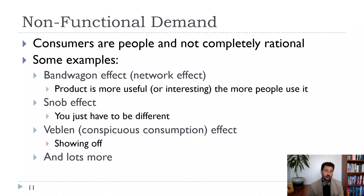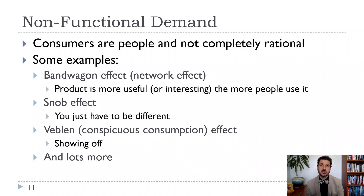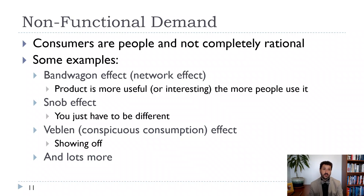The snob effect is where you differentiate yourself — whether it's drinking fancy coffee, fancy wine, or fancy cars. The Veblen effect is similar — it's conspicuous consumption, the idea that you're trying to keep up with the Joneses, so you might have to have a fancy car or a pool in the backyard because all your neighbors do. There are lots of other not-completely-rational pieces of demand that we'll talk about more as we go on.